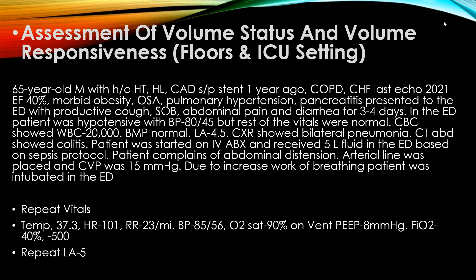Let's look at the clinical situation. We have a 65-year-old male who has a history of hypertension, hyperlipidemia, coronary artery disease with stent placed a year ago, COPD, CHF with last echo showing ejection fraction of 40%, morbid obesity, obstructive sleep apnea, pulmonary hypertension, and pancreatitis. The patient presented to the ED with cough, shortness of breath, abdominal pain, and diarrhea for three to four days.